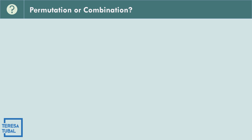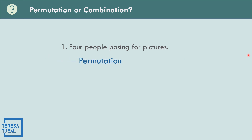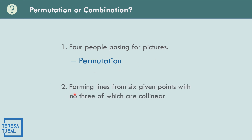Let us see if the given situation is a permutation or a combination. First: four people posing for pictures — this is a permutation because order is important. Second: forming lines from six given points with no three of which are collinear — this is a combination because order is not important.